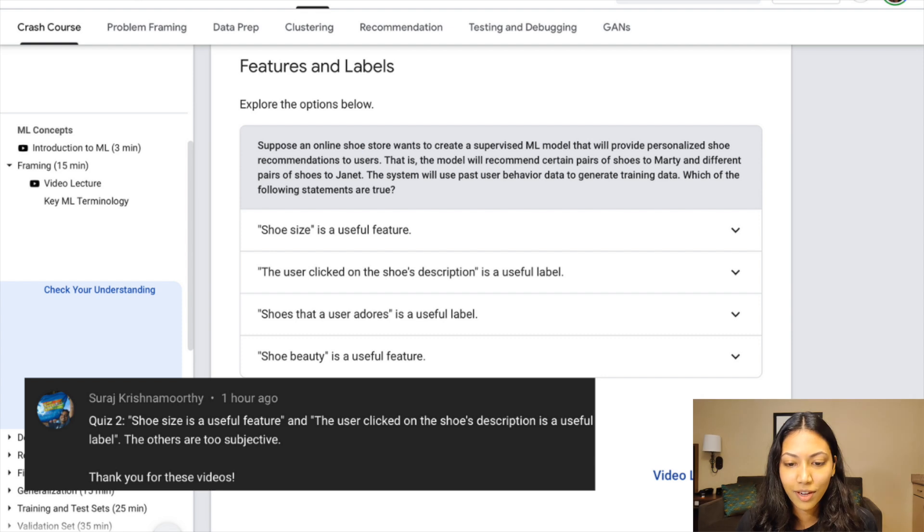Let's look at another answer by Suraj Krishnamurthy. Suraj says shoe size is a useful feature and the user clicked on the shoes description is a useful label. The others are too subjective. And thank you for your videos. Thank you for your comments, Suraj. So let's actually look at the answers.